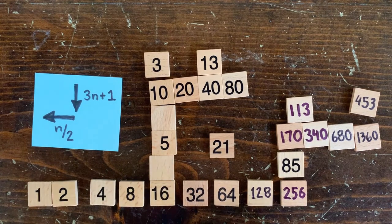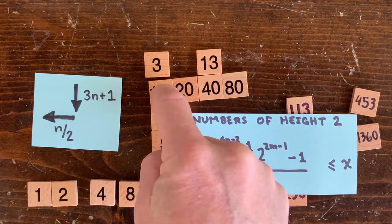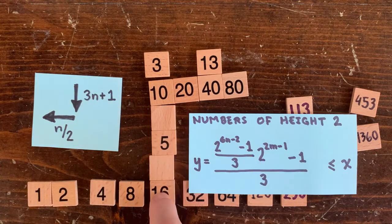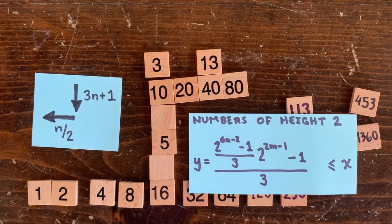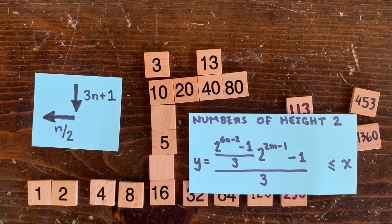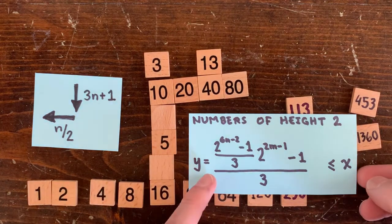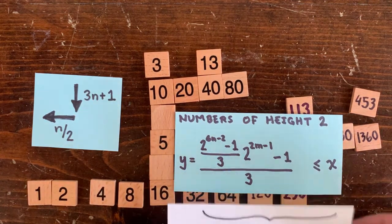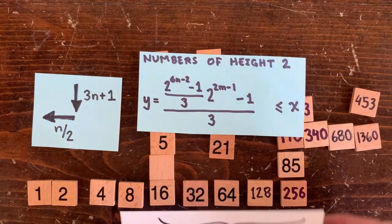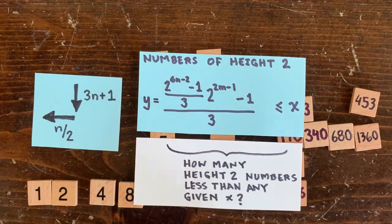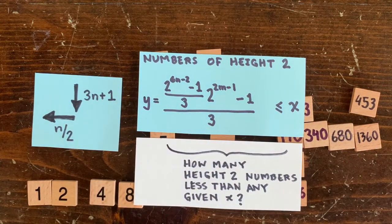y times 3 plus 1 divided by 2 to the 2m minus 1 times 3 plus 1 divided by 2 to the 6n minus 2 equals 1. And if we solve for y, we get this. For every combination of n and m, we get a different height 2 number y.